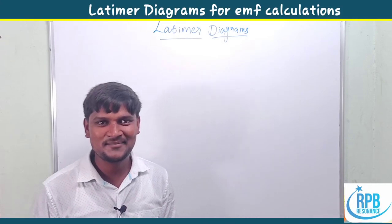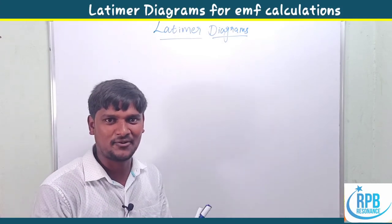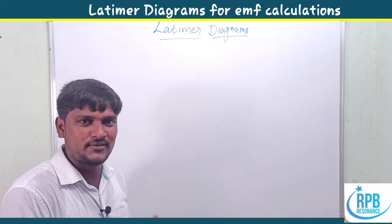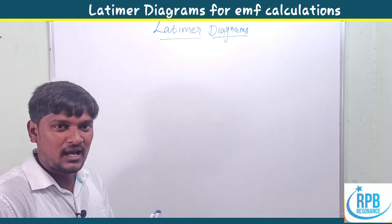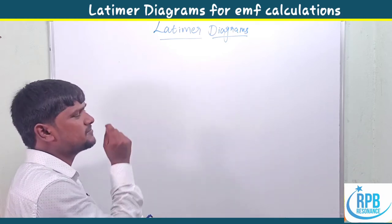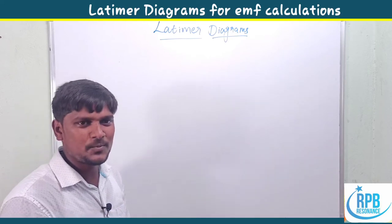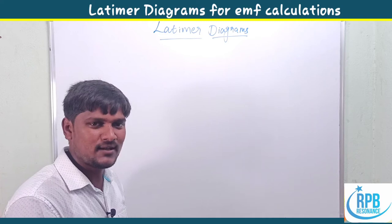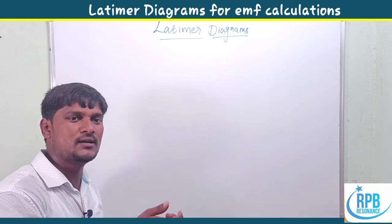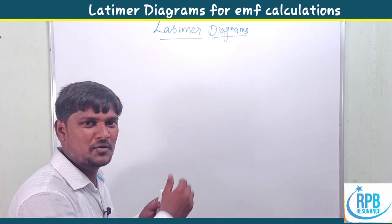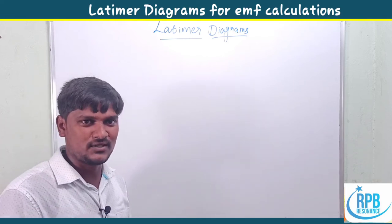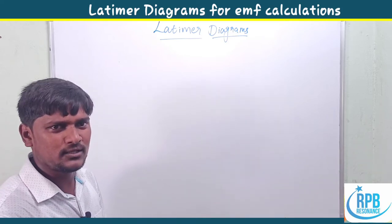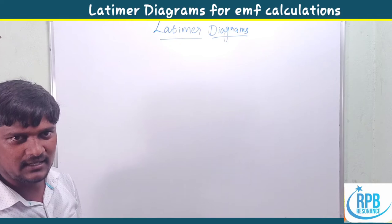Welcome to RPP Resonance Chemistry. Today we continue our literature on electrochemistry and deal with one of the best topics: determination of disproportionation reaction EMF values with the help of Latimer diagrams. The standard formula delta G equals minus nFE cell takes a lot of time in examinations, so I'll go through a very simple trick for these kinds of problems using Latimer diagrams.